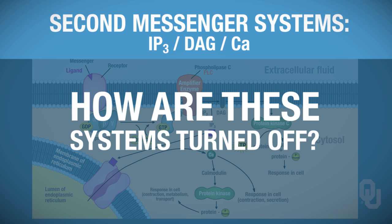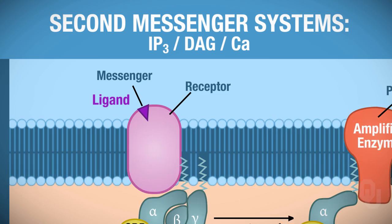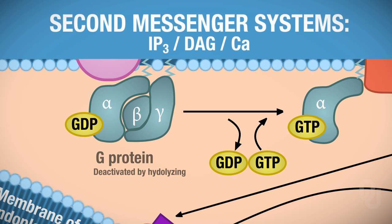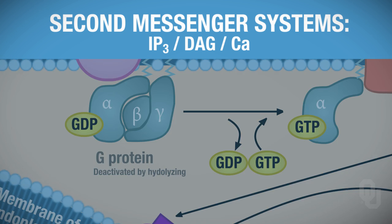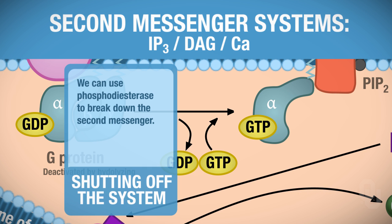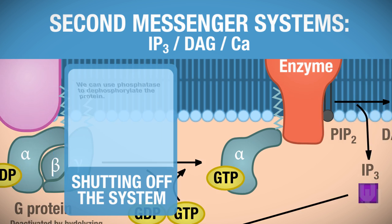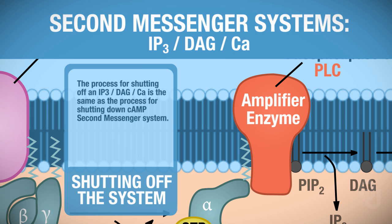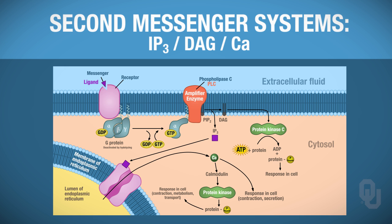The question is: how do we turn off these systems? The ligand has to fall off of the receptor — remember, binding is reversible. Then you deactivate your G-protein by hydrolyzing it. So far, that's the same as turning off a cyclic AMP second messenger system. You can also use a phosphodiesterase — an IP3 phosphodiesterase or a DAG phosphodiesterase — to break down the second messenger. And you can use a phosphatase to dephosphorylate your protein. The mechanism for turning off the IP3, DAG, and calcium system is the same as turning off cyclic AMP.